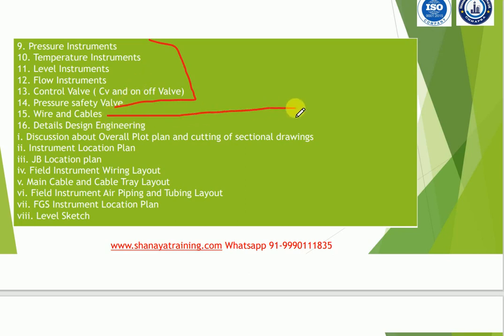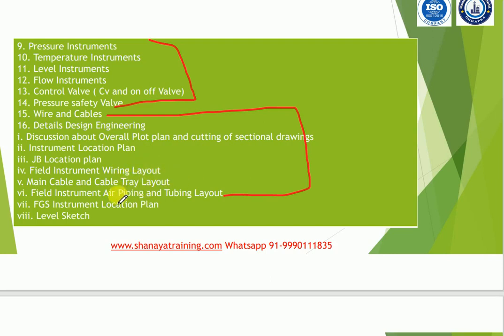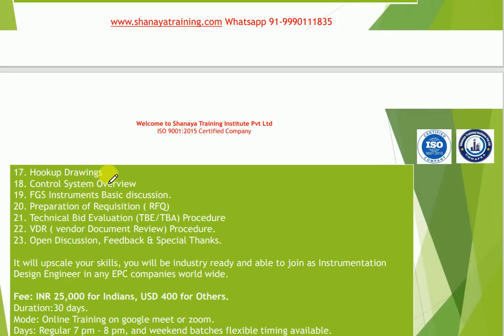In the detailed design part, we will discuss wiring and cable specifications, including cable schedule, drum schedule, and interconnection wiring. We will also cover overall plot tracking of sectional drawings, instrumentation location plans, junction box location plans, field instrument wiring layout, and all kinds of layout drawings in the detailed design engineering section.